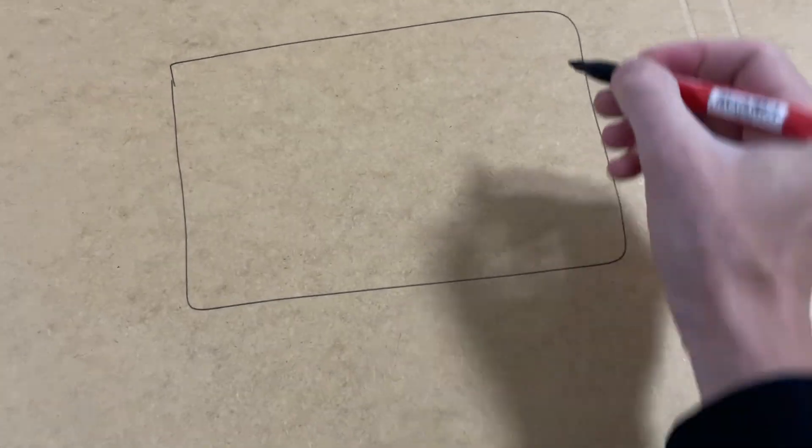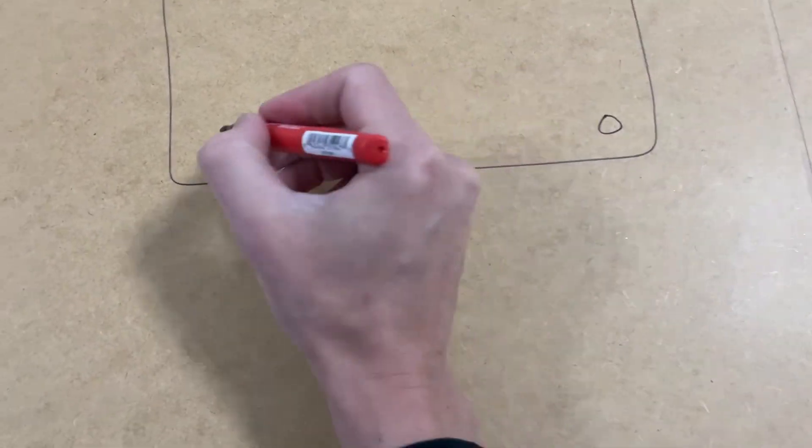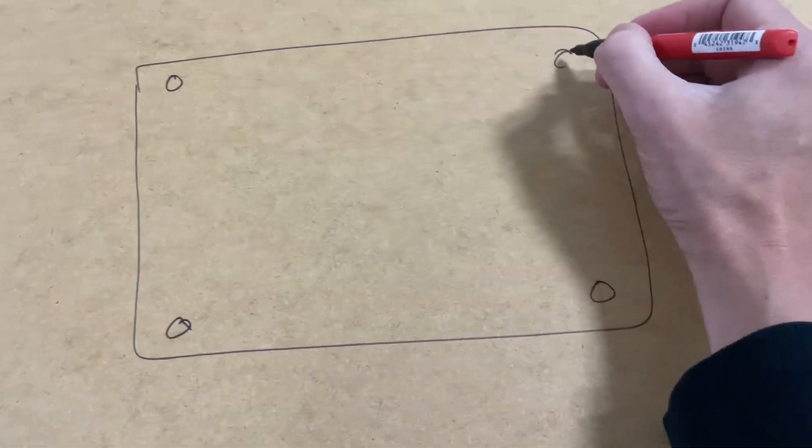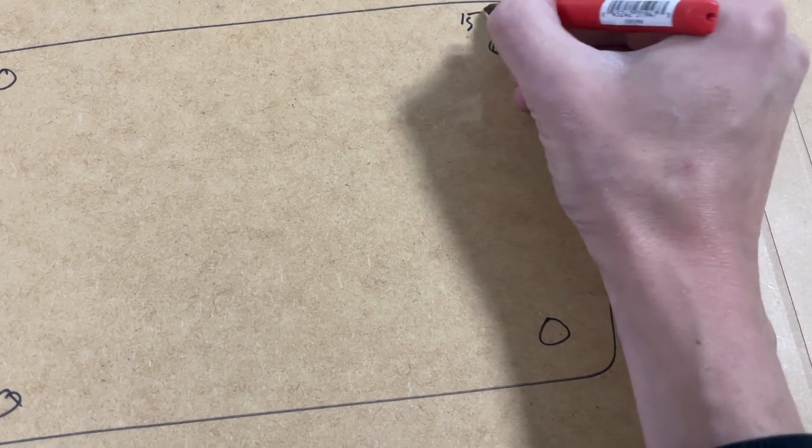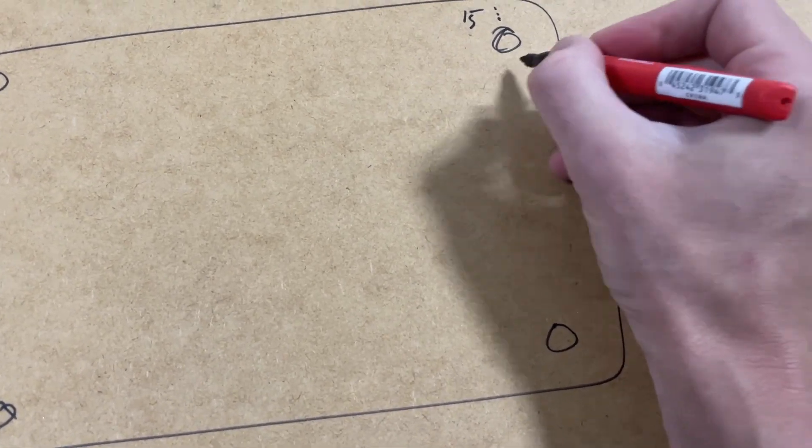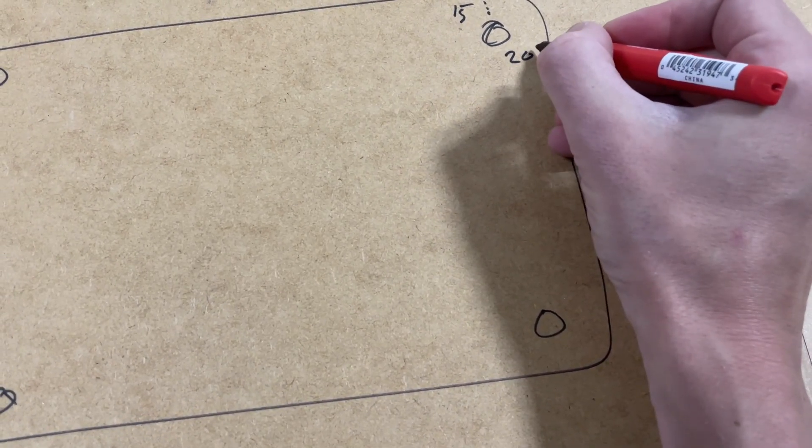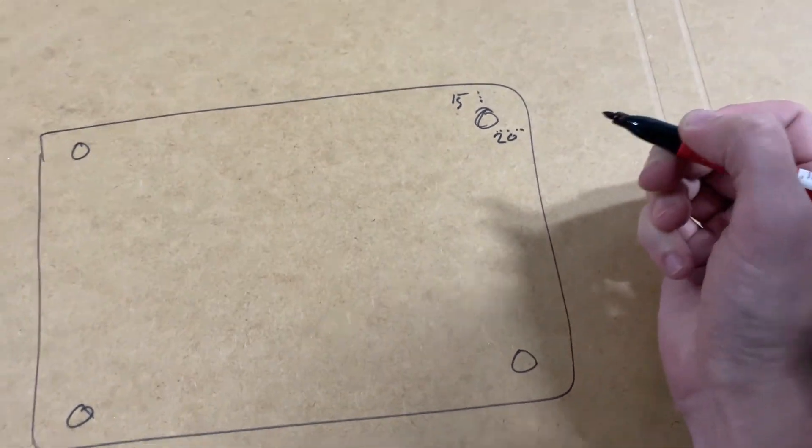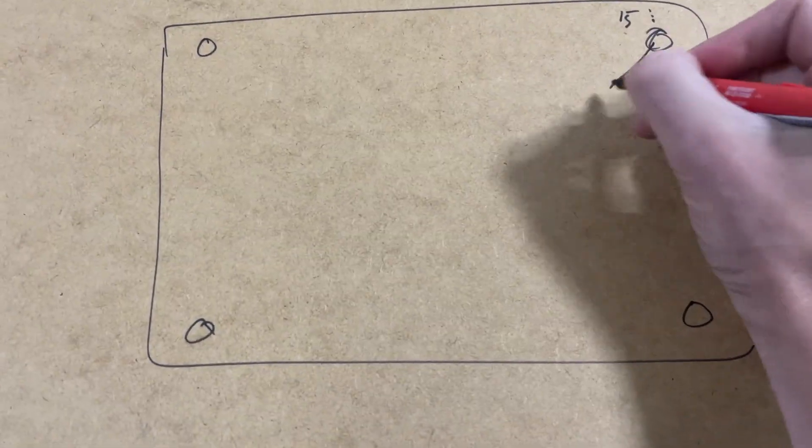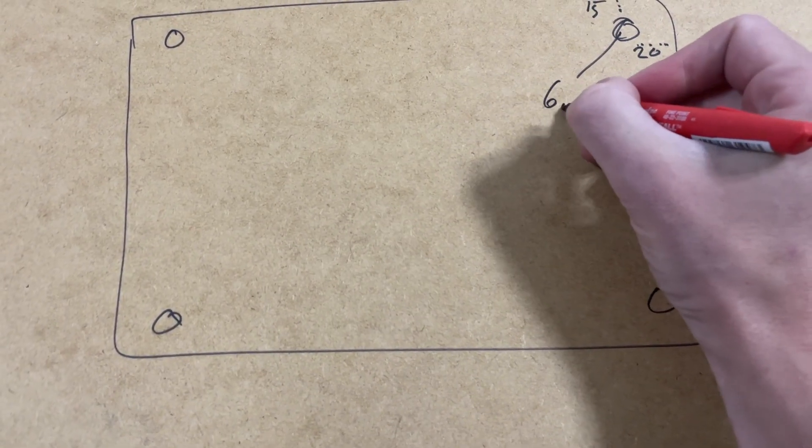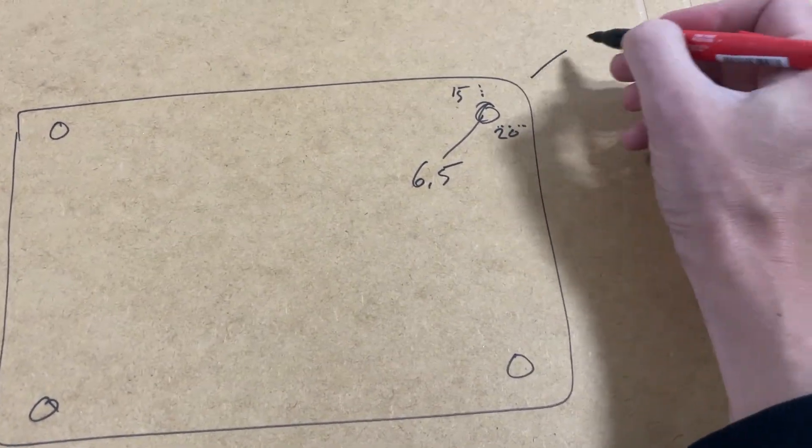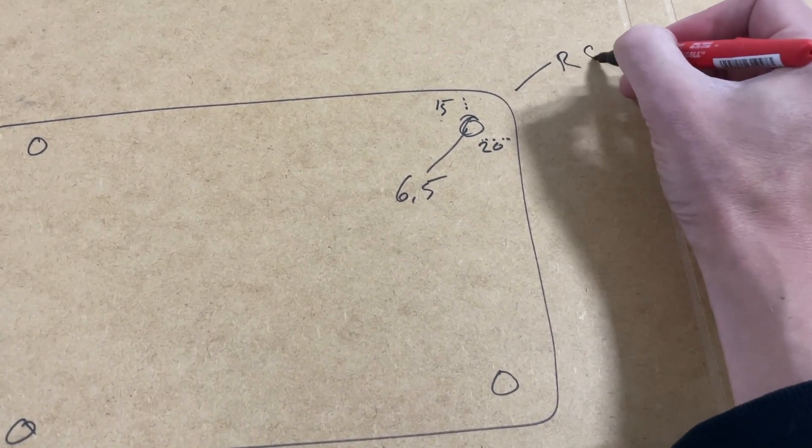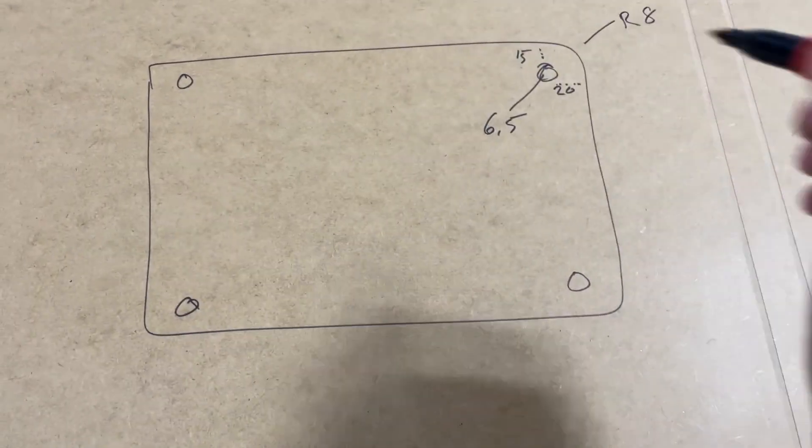So typically they're going to come in here and they're going to have one of these, and there's going to be a hole in every corner like this. Let's say it's 15 millimeters from that edge and 20 millimeters from that side, and that hole is, let's say, 6.5 millimeters for an M6. Let's say the radius is 8 in the corner so it's rounded and nice.